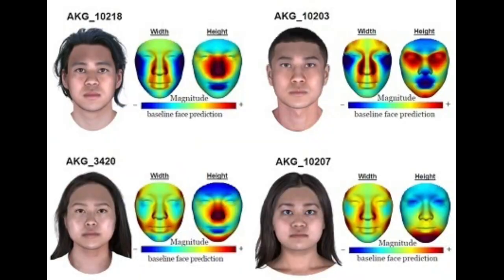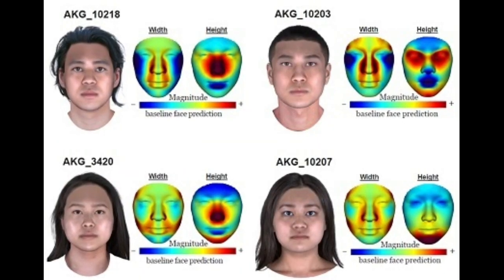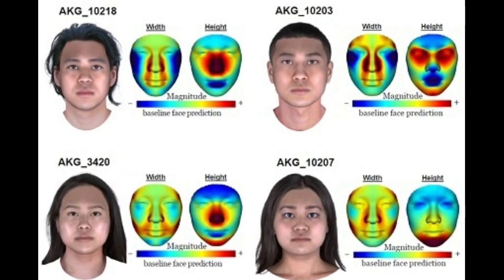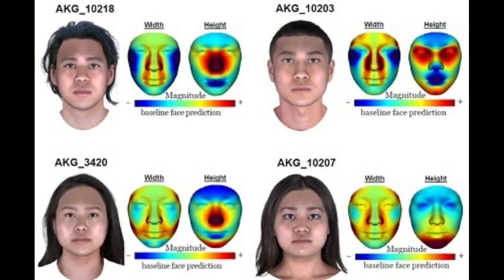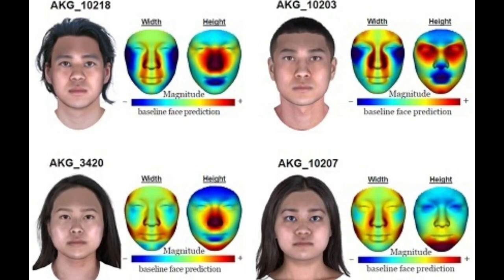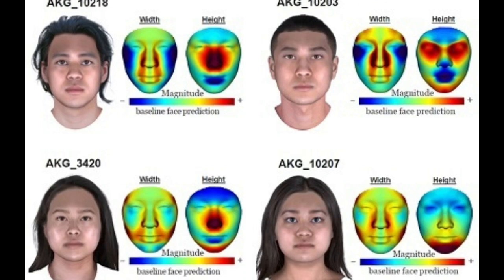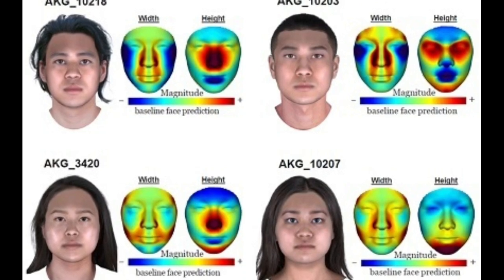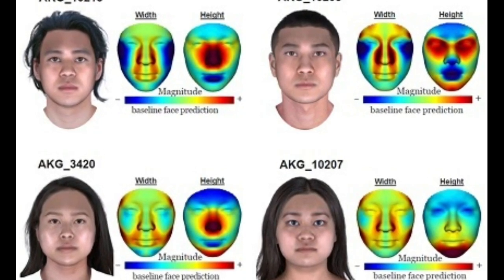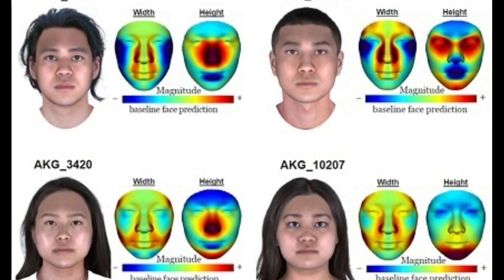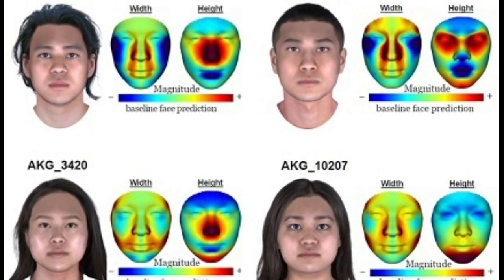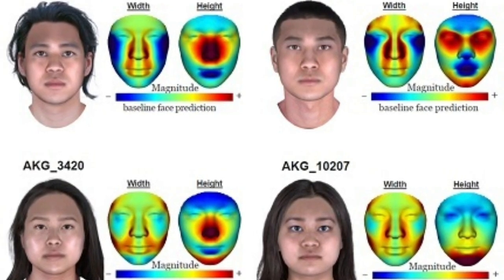Mitochondrial DNA is passed down exclusively through the maternal line, making it a powerful tool for tracking female ancestry. Meanwhile, the Y chromosome is inherited from father to son, offering insights into male ancestry. By comparing these two types of genetic markers across different East Asian populations, scientists have been able to map out the migration routes and genetic mixing that shaped the region.